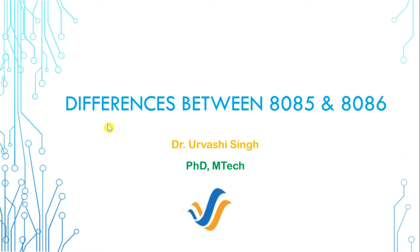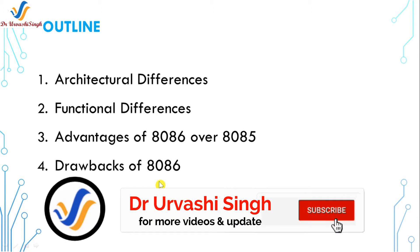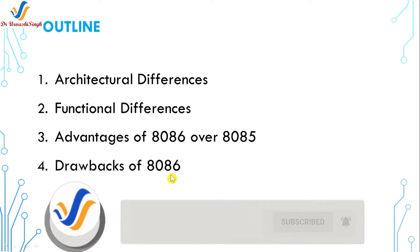Welcome students. This video is dedicated to the differences between 8085 and 8086 microprocessors. In this video you will see the architectural and functional differences between these two microprocessors, the advantages of 8086 over 8085, and then the drawbacks of 8086 microprocessor. So please watch the video completely and thoroughly and do not forget to subscribe the channel for more contents.